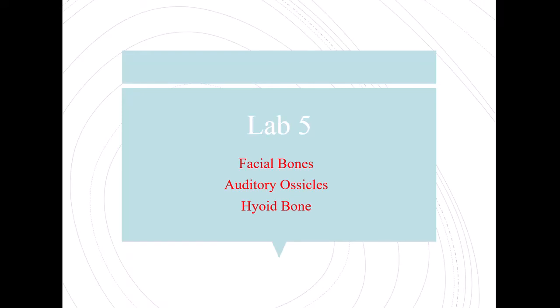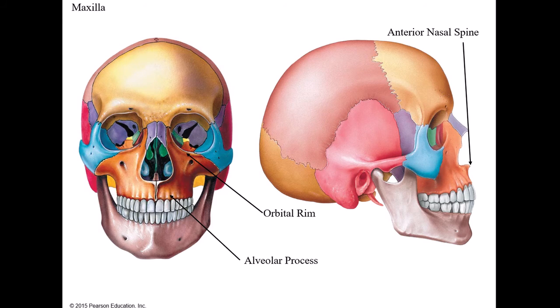In this lab we'll take a look at the 14 facial bones, and then we'll briefly mention the auditory ossicles which are in the ear. We'll look at them in greater detail when we study the anatomy of the ear in the nervous system unit. Then we'll take a look at a floating bone in the neck known as the hyoid bone.